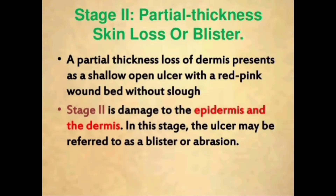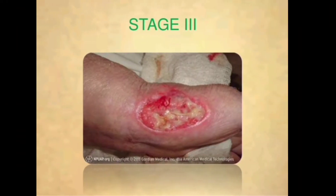Stage two is partial thickness skin loss or blister — a partial thickness loss of dermis presenting as a shallow open ulcer with a red-pink wound bed without slough. Stage two involves damage to the epidermis and the dermis layers of the skin. In this stage the ulcer may be referred to as a blister or abrasion.